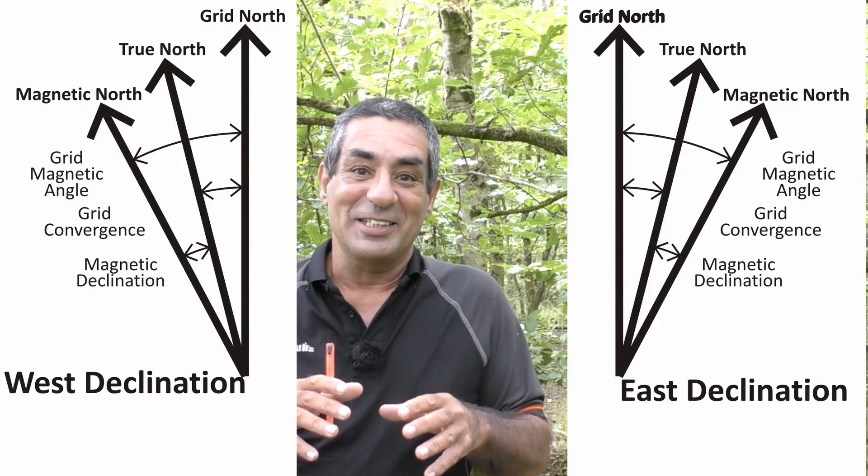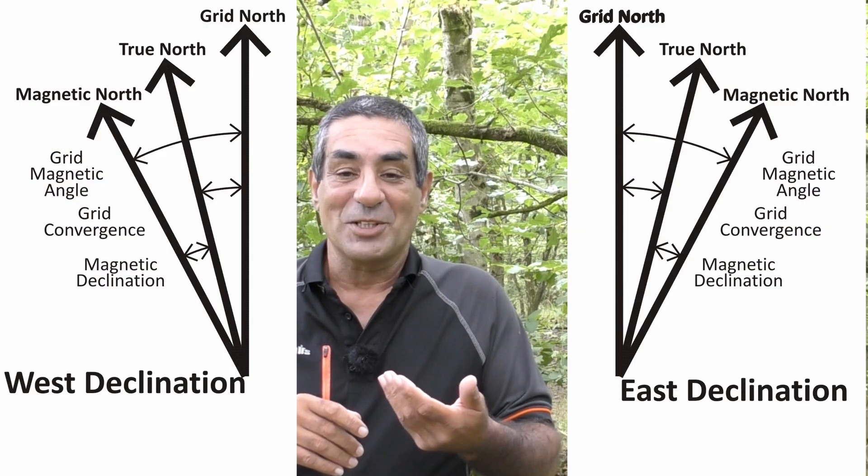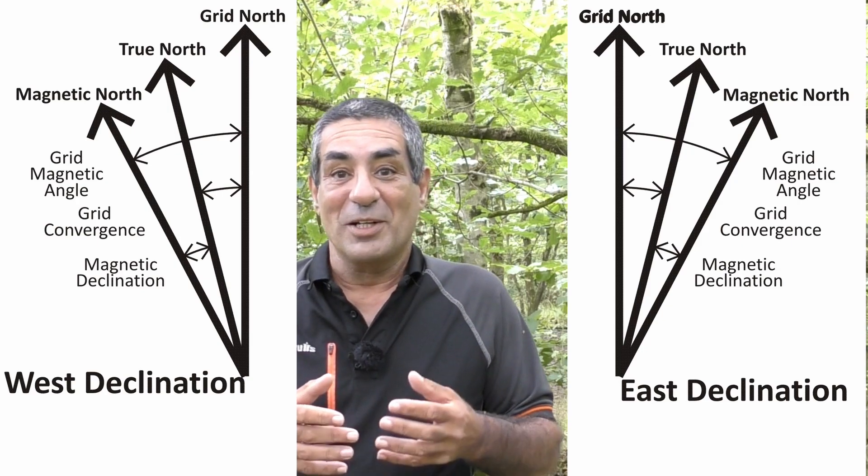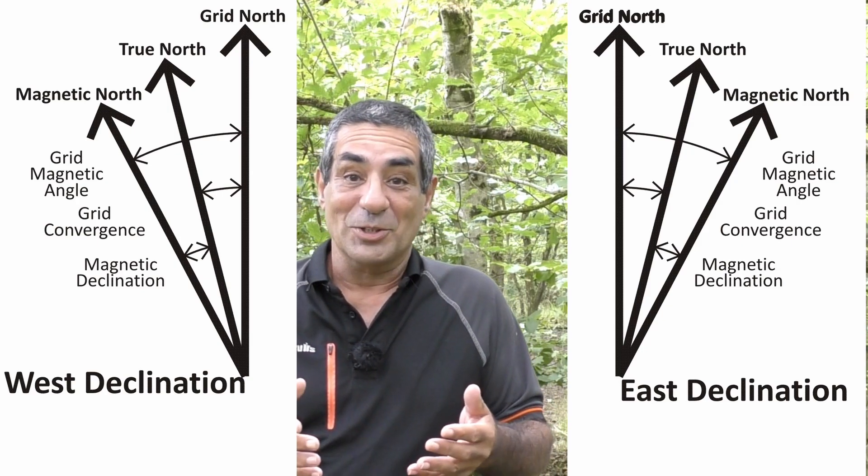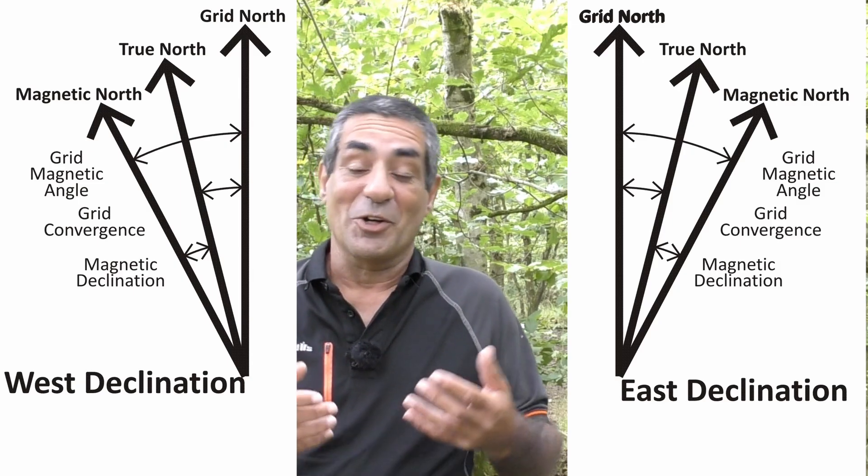In this video I'm going to use the word declination as the difference between your map and your compass. Declination is actually the difference between your compass direction and true north, but I always try to keep things really simple where possible — and let's face it, most people have got a map and a compass and they just use them together. So as soon as you start talking about declination, it can, if you allow it, start getting really complicated.